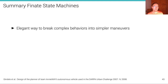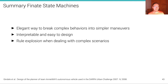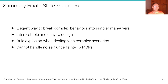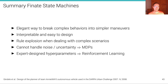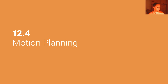In summary, finite state machines are an elegant way to break complex behaviors into simple maneuvers — they are interpretable and easy to design. However, with complex scenarios we must avoid rule explosion, which makes them less interpretable and more prone to bugs. Additionally, finite state machines cannot handle noise or uncertainty; for that we need probabilistic models such as Markov decision processes. Many FSMs deployed in the DARPA Urban Challenge also relied heavily on expert-designed hyperparameters, and it would be preferable to learn these — for example using reinforcement learning.